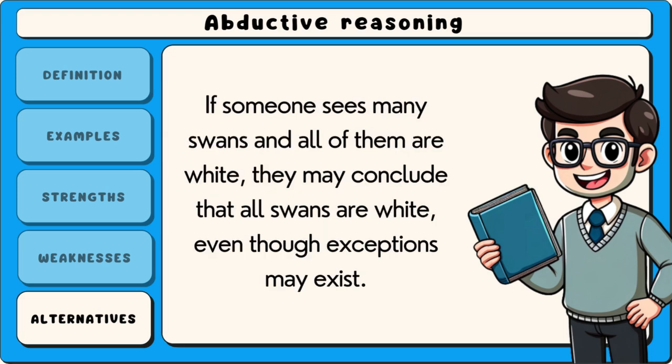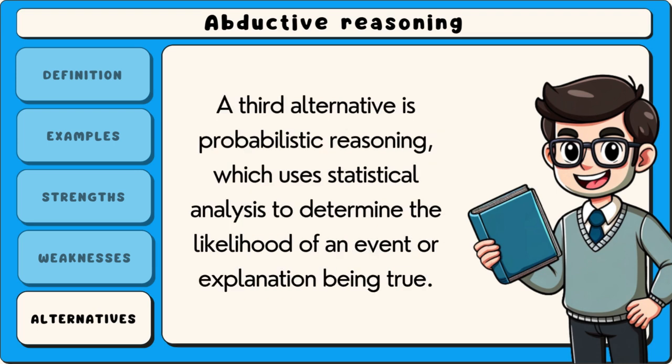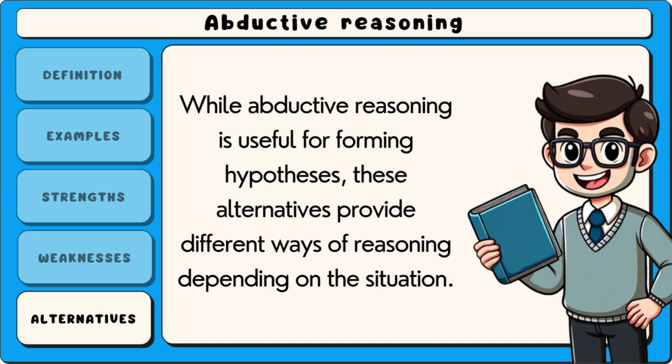If someone sees many swans and all of them are white, they may conclude that all swans are white, even though exceptions may exist. A third alternative is probabilistic reasoning, which uses statistical analysis to determine the likelihood of an event or explanation being true. While abductive reasoning is useful for forming hypotheses, these alternatives provide different ways of reasoning depending on the situation.